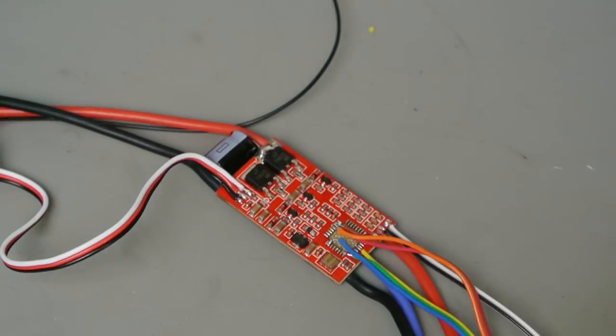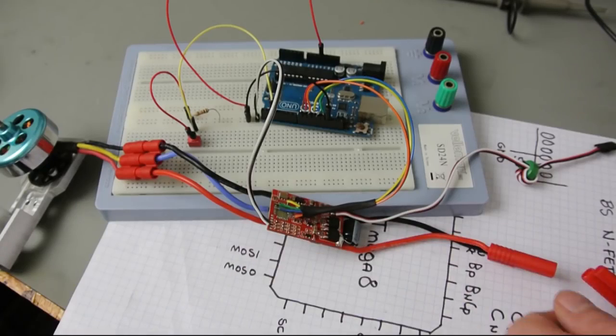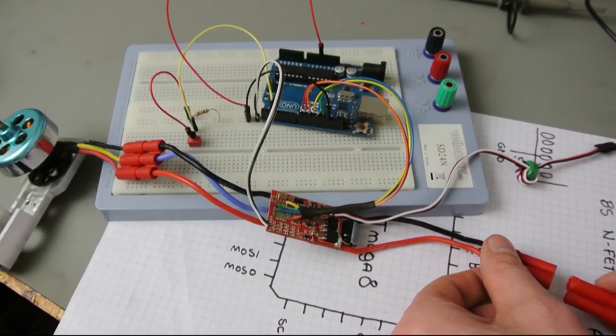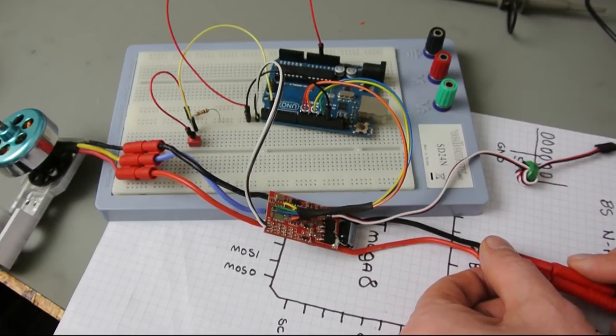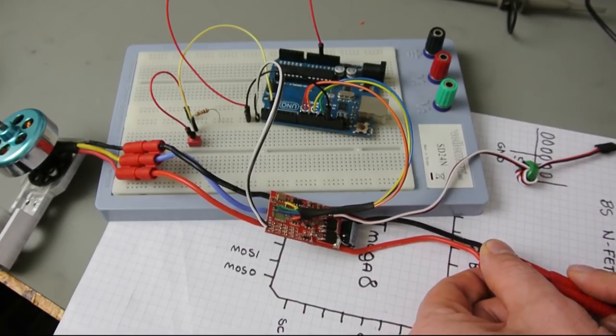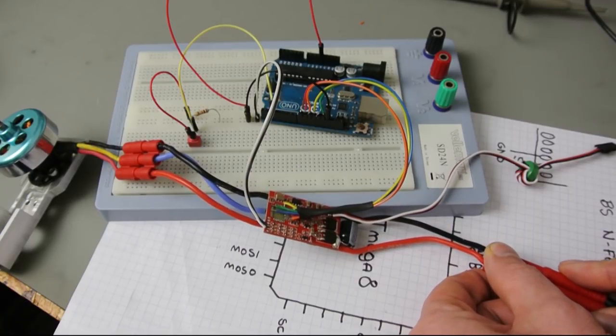If you want to try something like this yourself, it's best to debug it first with a current limiting power supply. Because those batteries can produce pretty high currents, which can make bugs in your code quite expensive.